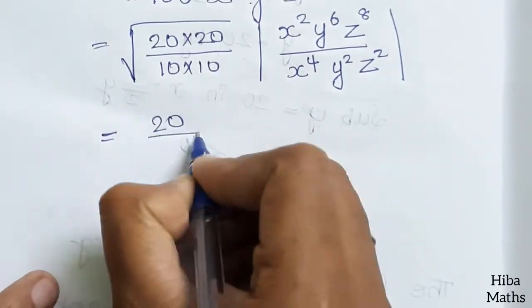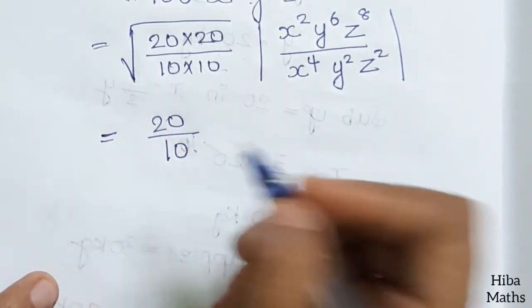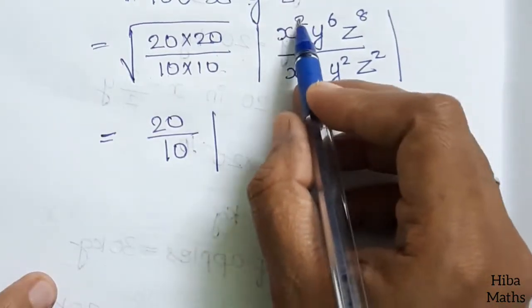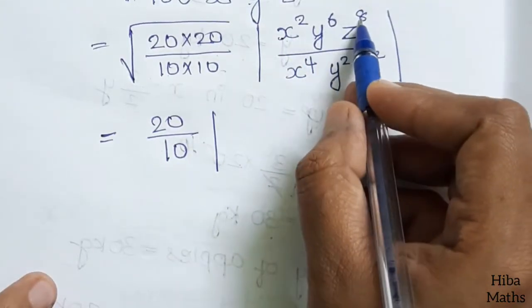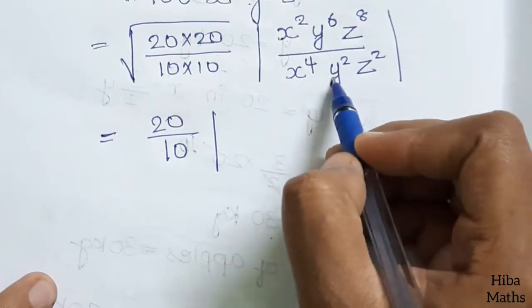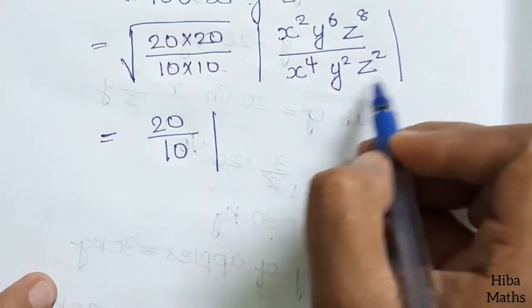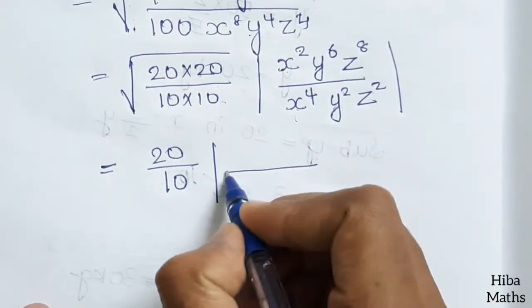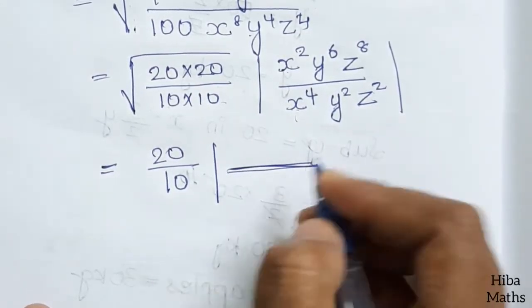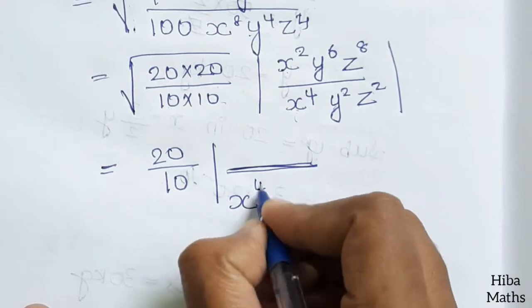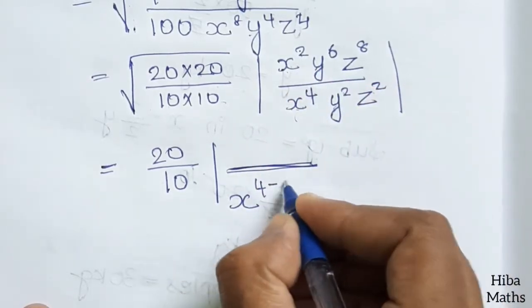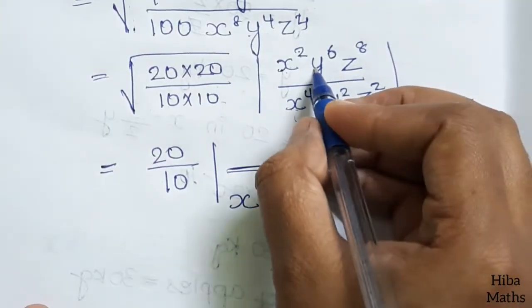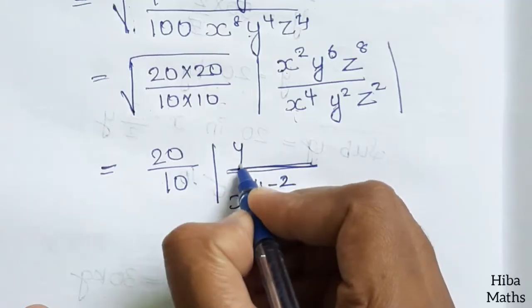For the coefficients, 20 divided by 10 gives 2. So we have modulus of x power 2, y power 6, z power 8 over x power 4, y power 2, z power 2. For x, the power is 2 minus 4, which is minus 2.